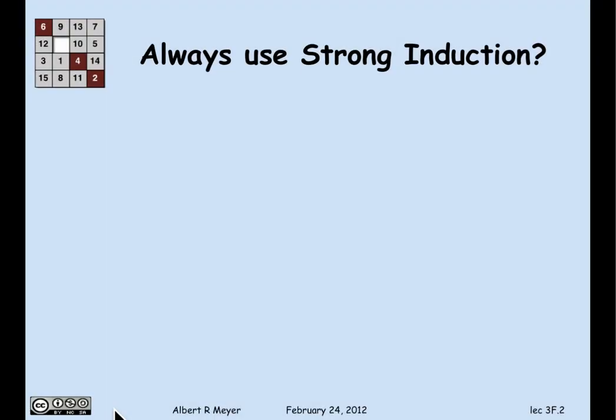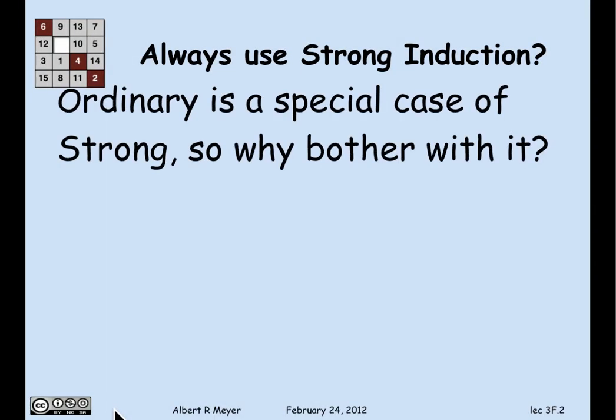First of all, it's clear that ordinary induction is a special case of strong induction. In ordinary induction, you're allowed to assume only P of n. In strong induction, you can assume everything from P of 0 up to P of n to prove P of n plus 1. But you don't have to use all the extra assumptions — you could just use P of n, so any ordinary induction can be seen as a special case of strong induction. It would be a little misleading to call it strong induction, but it is strong induction.